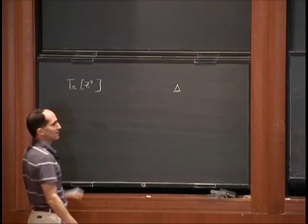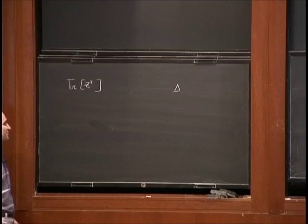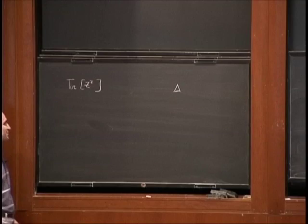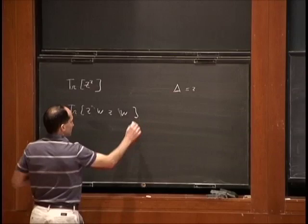For this particular case, we know the anomalous dimension. You remember why we knew the anomalous dimension for this one for all values of the coupling? It was VPS. We know for this particular case the anomalous dimension was two. But for more complicated cases where we have C's and W's and other fields, we'll have more complicated anomalous dimensions.